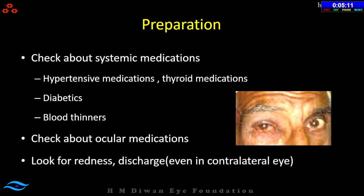Check for ocular medications — every hospital has their own pre-operative antibiotic prophylaxis protocol. For patients on anti-glaucoma medication, check that also. Most importantly, look for redness and discharge — any redness or discharge, even in the contralateral eye, requires assessment of the cause, and the surgery should be postponed if needed. You cannot take up a patient if there is any sign of infection in the eye.